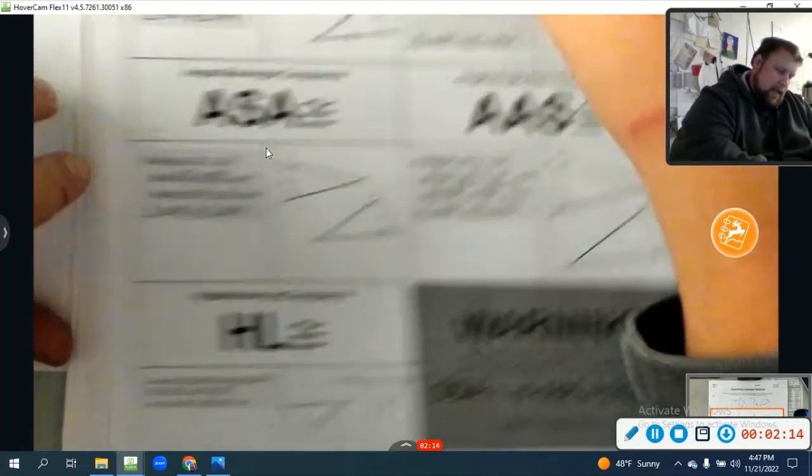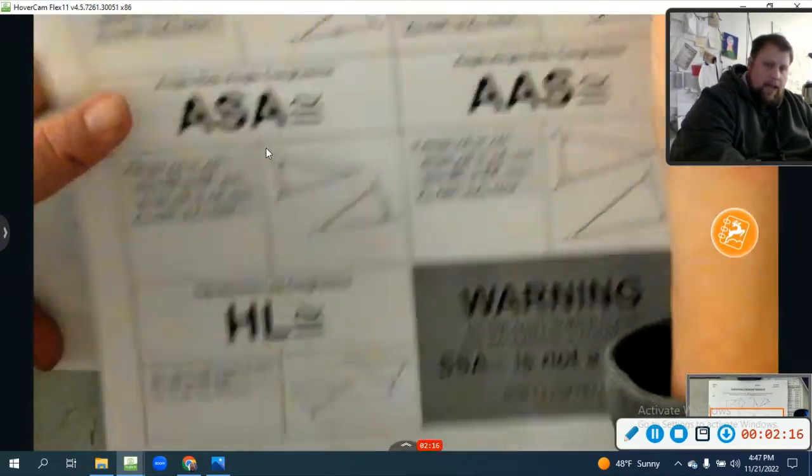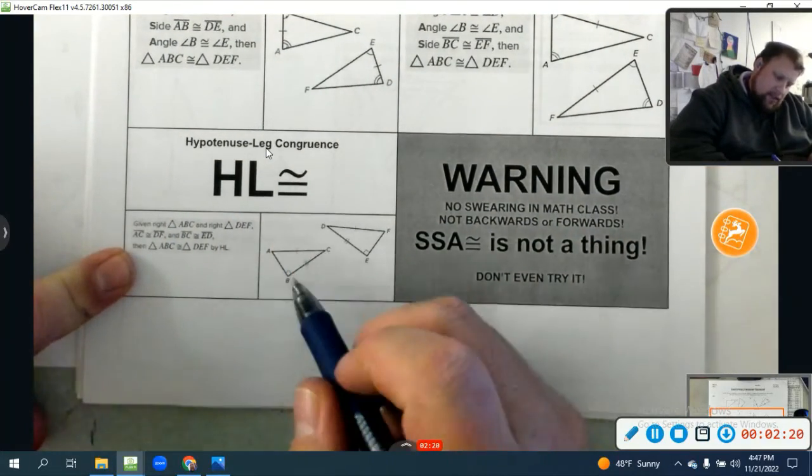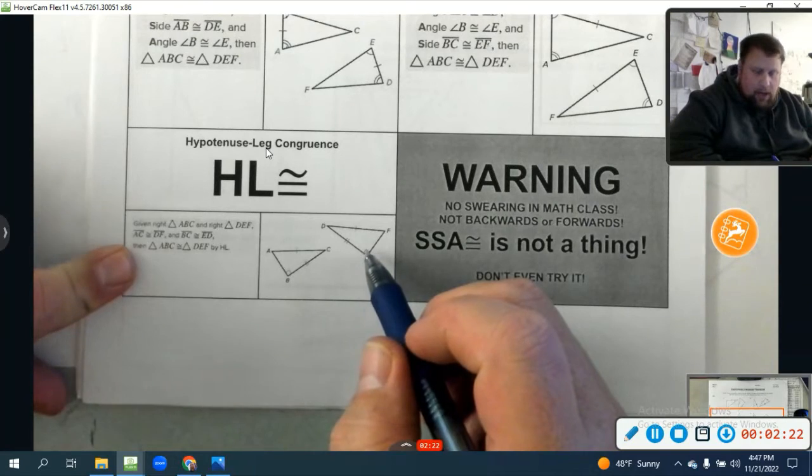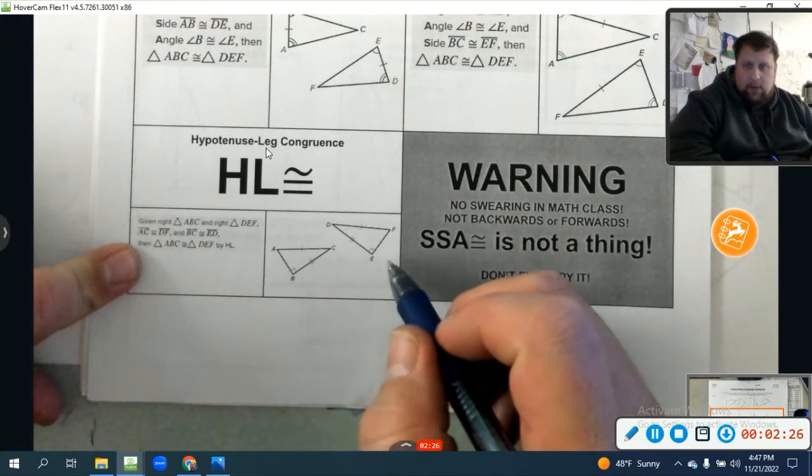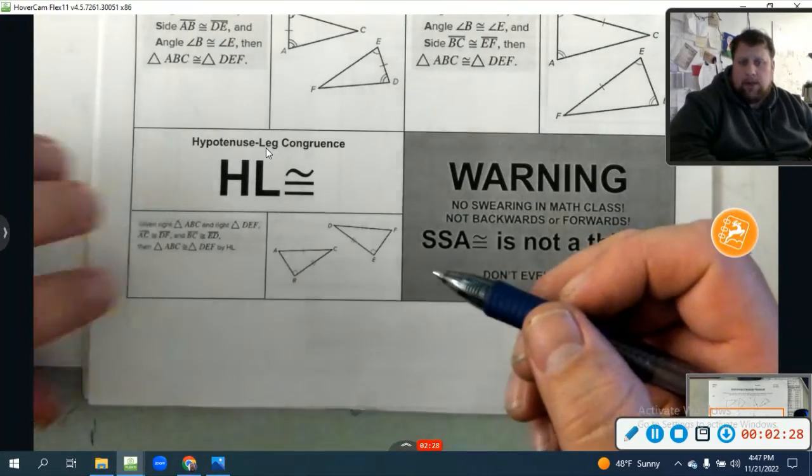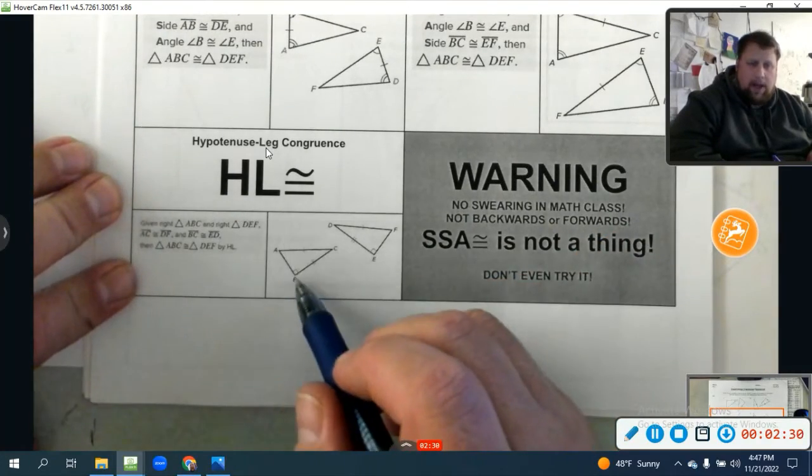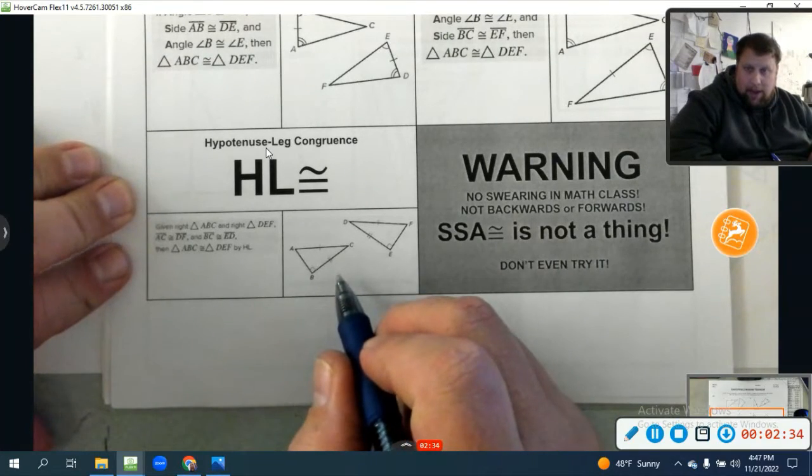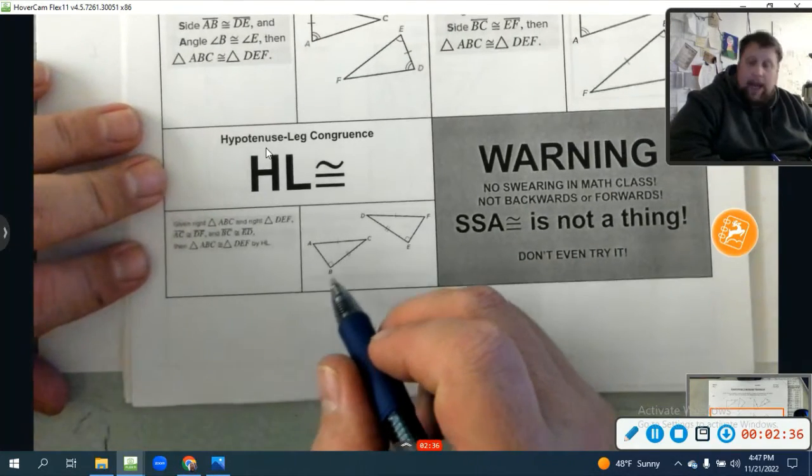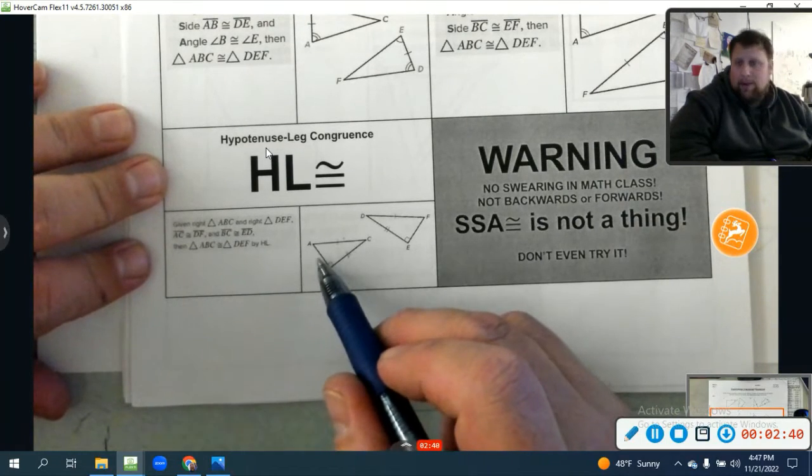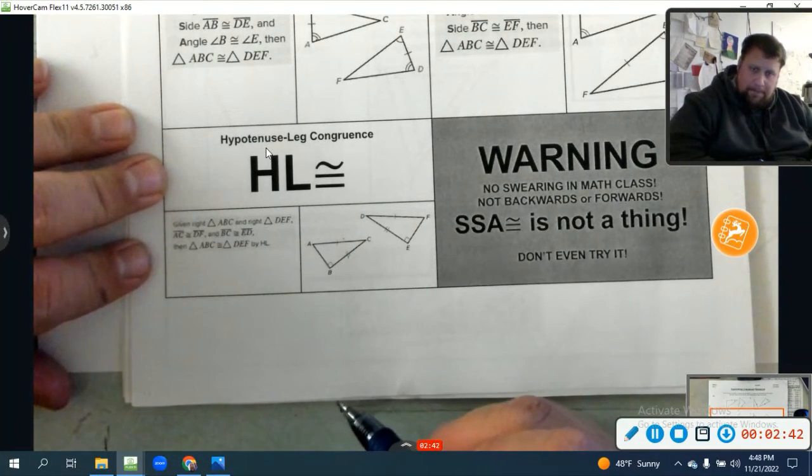Last one we're going to really talk about today is hypotenuse leg, and then we'll all have a laugh. Hypotenuse leg just says this: if I know I'm talking about 90-degree triangles, and I'm given that the hypotenuses are congruent, as long as at least one leg is congruent, I know the other leg is congruent as well, and this is called hypotenuse leg. It's because we know A squared plus B squared equals C squared. If I have the B squared and I have the C squared, we know the A squared has to be the same as well.